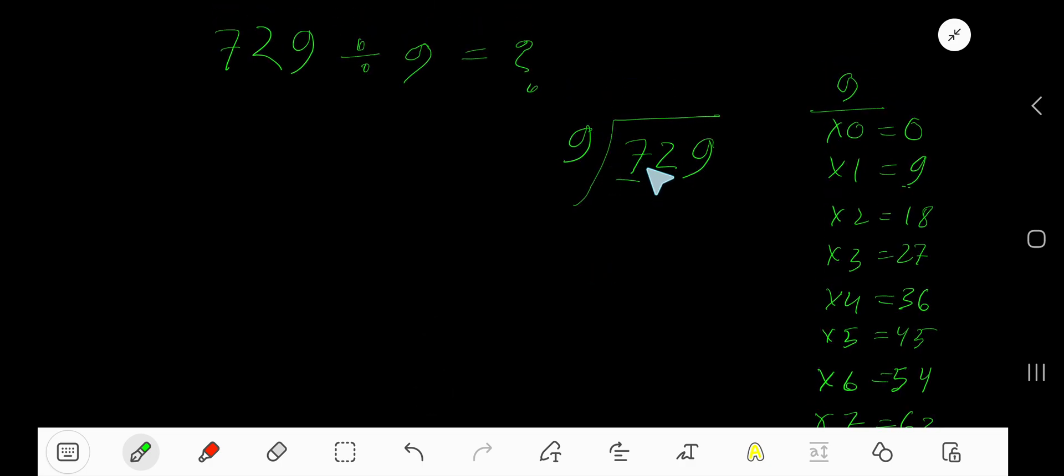0 times, as our current dividend 7 is less than 9. So 0 times 9, that gives you 0. Subtract, you are getting 7. Bring down the next digit. Now our current dividend is 72.